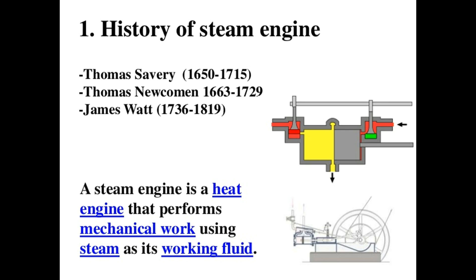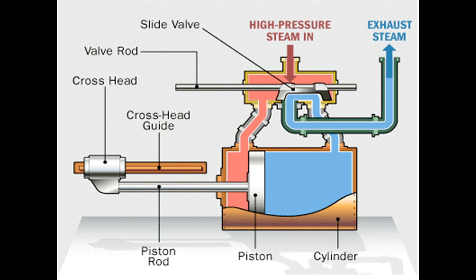Steam engine operation. The following diagram shows the major components of a piston steam engine — the sort of engine typical in a steam locomotive. The engine shown is a double-acting steam engine because the valve allows high-pressure steam to act alternately on both faces of the piston.